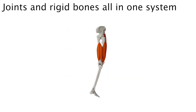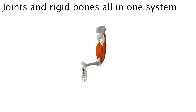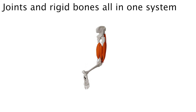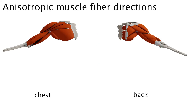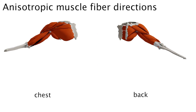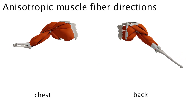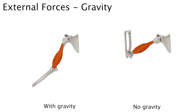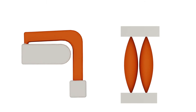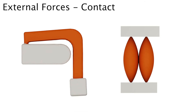In contrast to other methods that use non-trivial coupling terms to transfer muscle forces to bones, our framework handles muscles and bones in one simple system without the need for any coupling terms. EMU can handle large musculoskeletal systems with anisotropic fibers on multiple muscles, as well as external forces such as gravity, and can also resolve collisions.